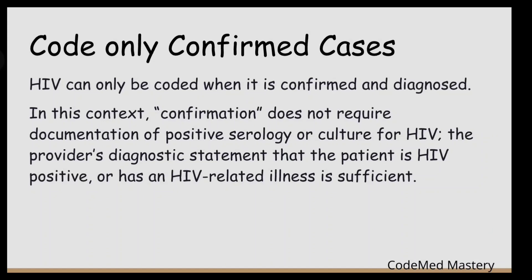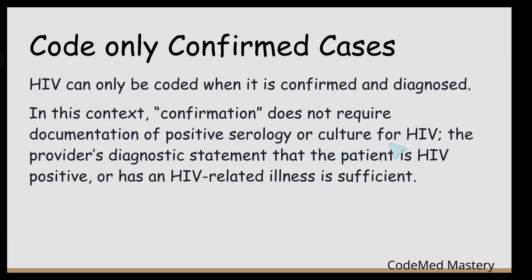The first guideline is: code only confirmed cases. HIV can only be coded when it is confirmed and diagnosed. Confirmation does not require documentation of positive serology or culture for HIV. The provider's diagnostic statement that the patient is HIV positive or has an HIV-related illness is sufficient.